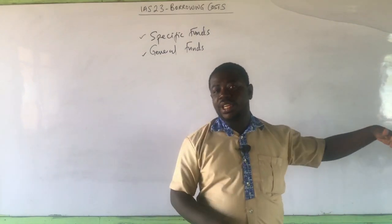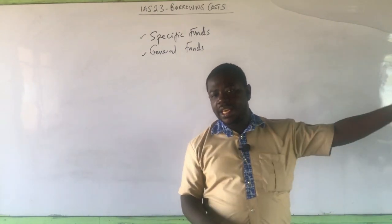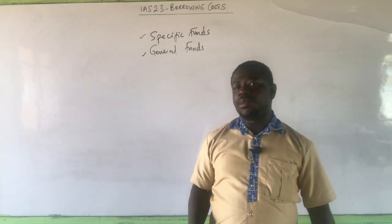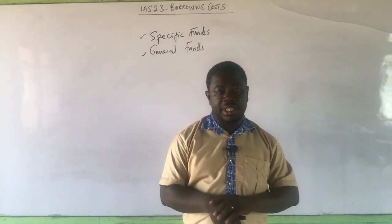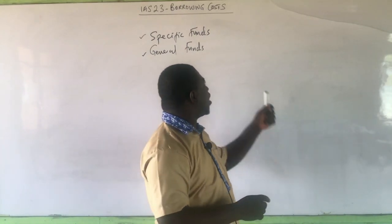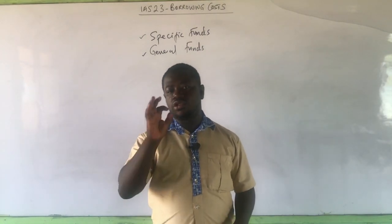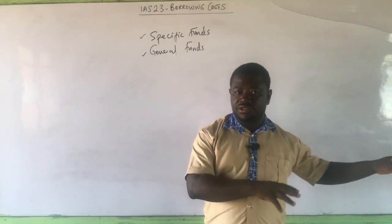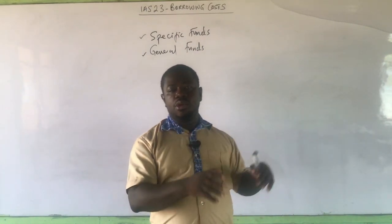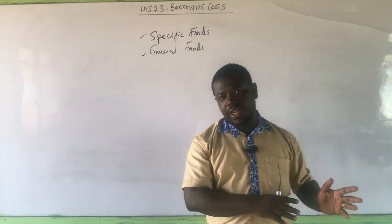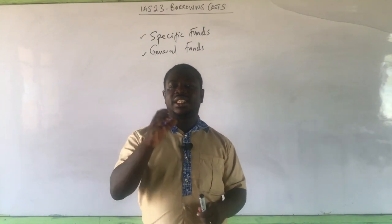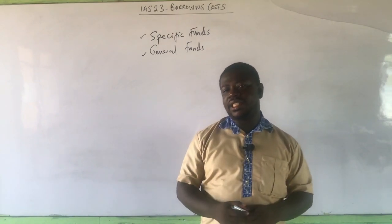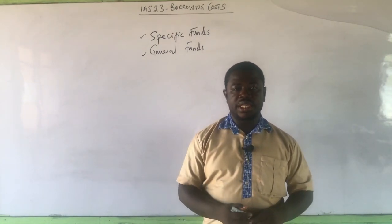The other parts not used will continue as general borrowings, and the interest expense and borrowing costs connected with those will be expensed because they are not eligible for capitalization. So we are saying that the portion of general borrowing used to construct a qualifying asset attracts borrowing costs, and only those borrowing costs attached to the portion used for construction will be eligible for capitalization.